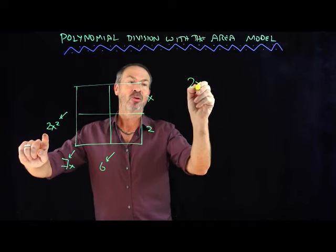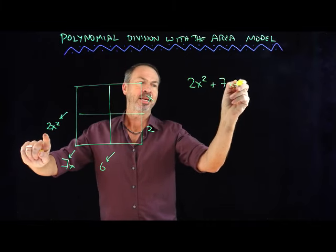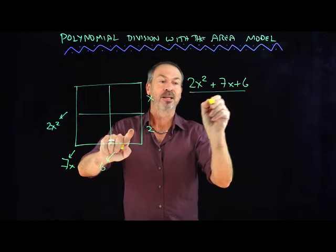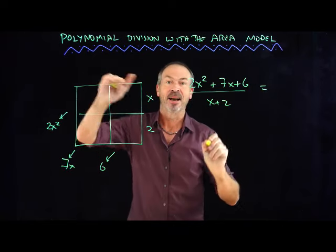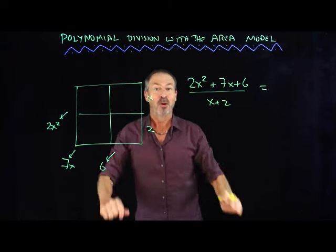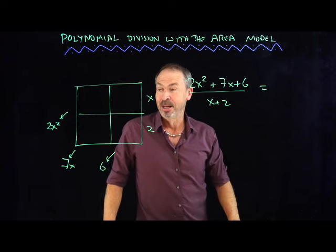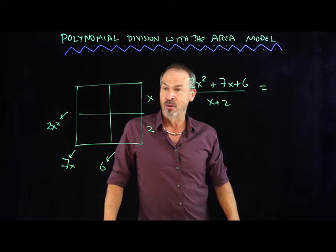Here's the answer to a multiplication problem, but I'm leaving out some information. What times x + 2 gives this answer? Can we do that multiplication backwards? That is, can I do this division problem? Here's my answer: 2x² + 7x + 6. I want to divide it by x + 2 to find out what the other factor had to be. So I'm doing polynomial division now with the area model.